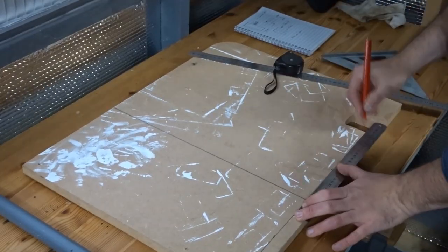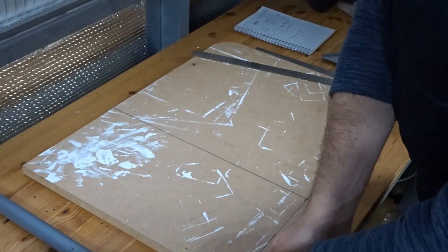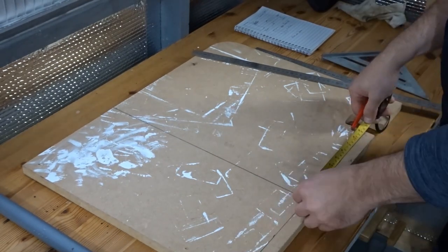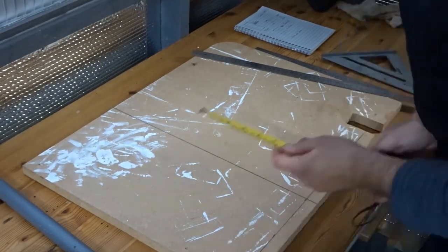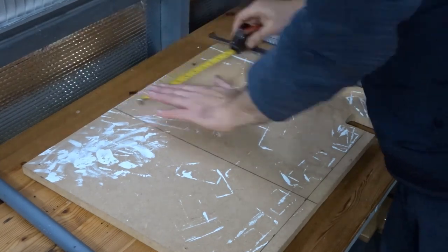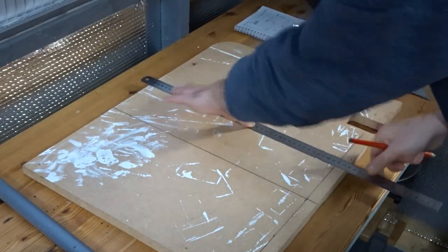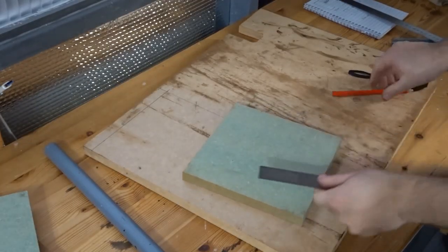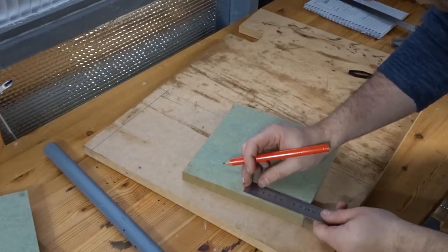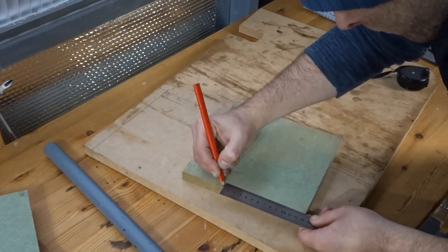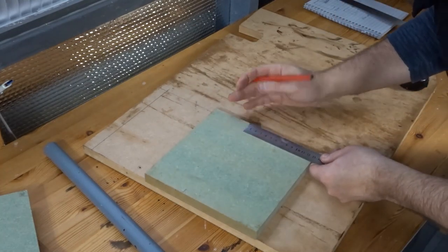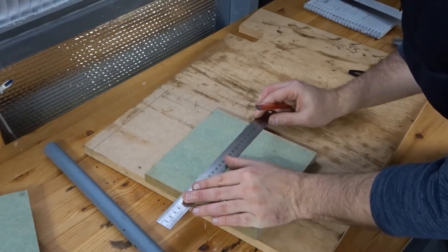I would have liked to have used plywood but I didn't have any, so I wanted to make use of this MDF. Now I'm just marking up the separate panels. For the front and back I've got these little squares of water resistant MDF, and I'm going to mark these up and add a curve to the top.